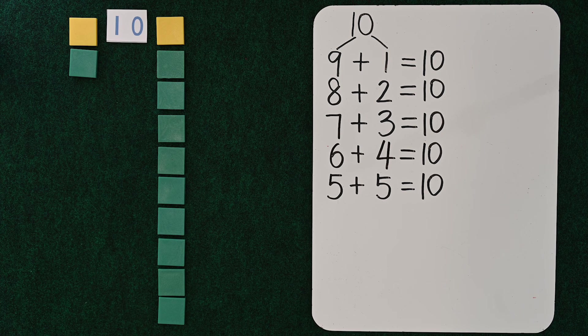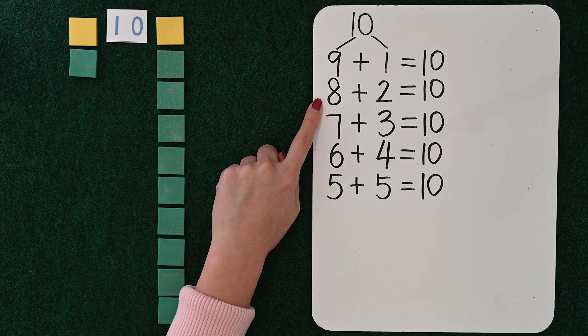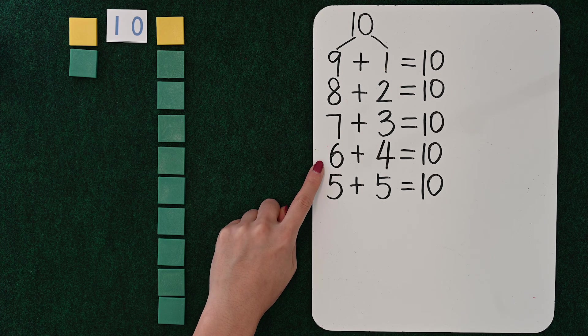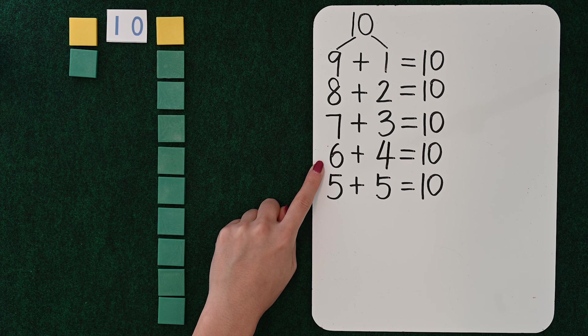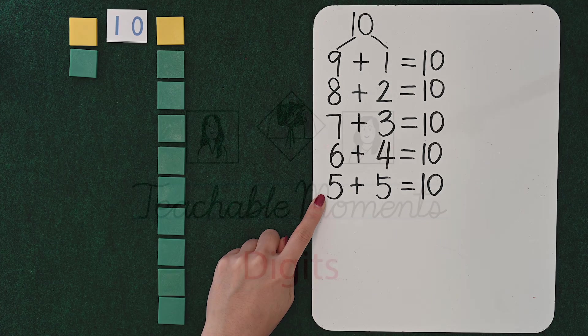9 and 1 or 1 and 9. 8 and 2 or 2 and 8. 7 and 3 or 3 and 7. 6 and 4 or 4 and 6. Or 5 and 5, which even if you switch them, it's still 5 and 5.